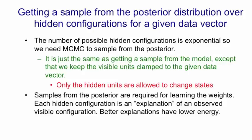The reason we need to get samples from the posterior distribution given a data vector is we might want to know a good explanation for the observed data. And we might want to base our actions on that good explanation. But we also need to know that for learning.